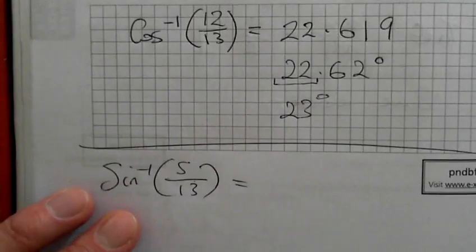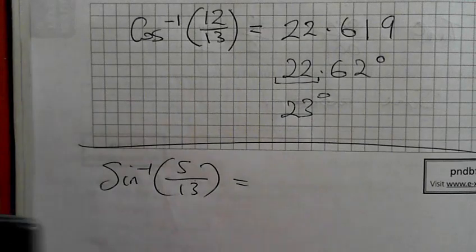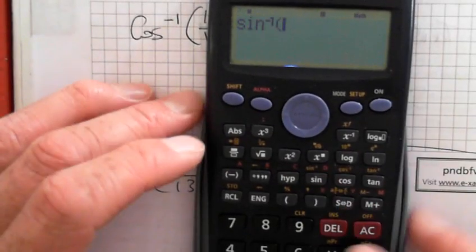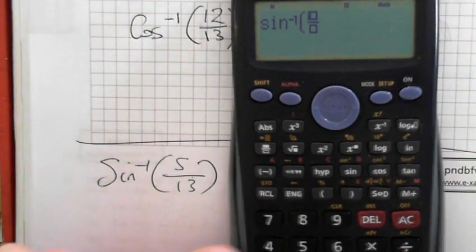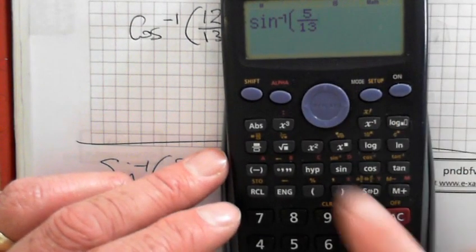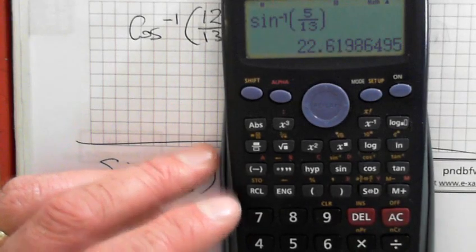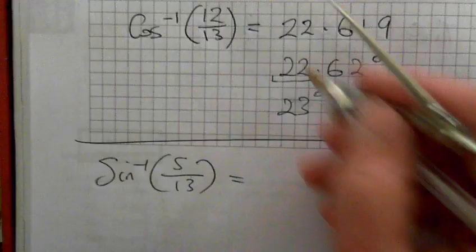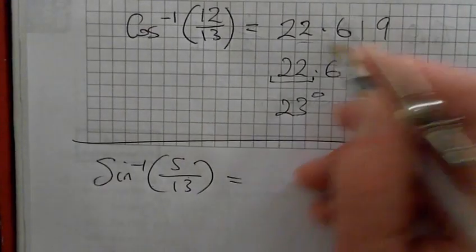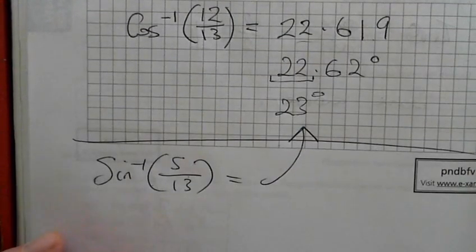So sine inverse, opposite is 5 over 13. 22.619, 22.619. Exactly the same, exactly the same answer as both of you, same as that.